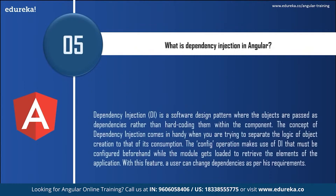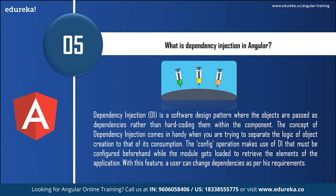Next: what is dependency injection in Angular? Dependency injection is a software pattern where objects are passed as dependencies rather than hard-coding them within the component. The concept of dependency injection comes in handy when you are trying to separate the logic of object creation from that of its consumption. The config operation makes use of dependency injection that must be configured beforehand while the module gets loaded to retrieve the elements of the application. With this feature, a user can change dependencies as per their requirements.